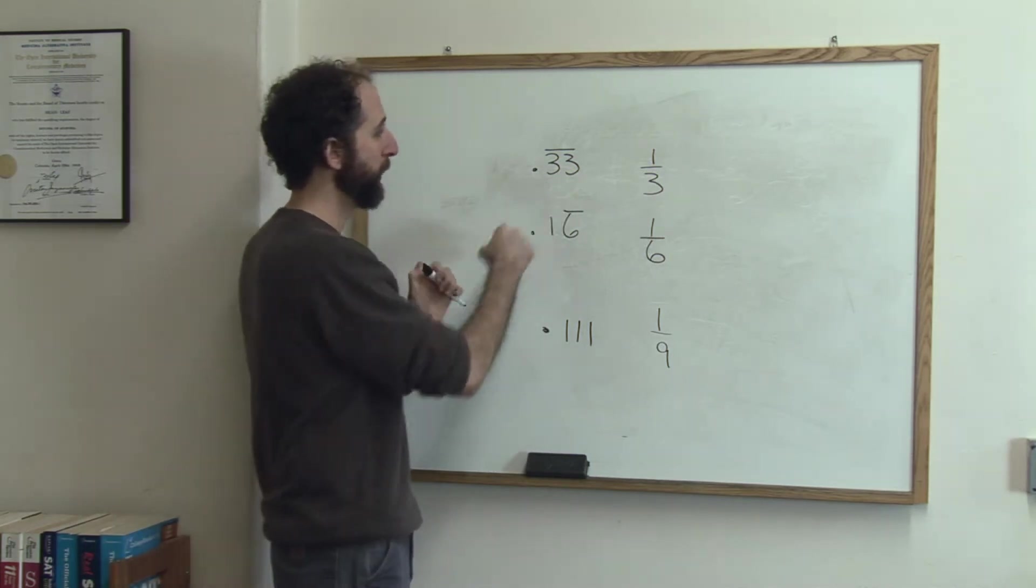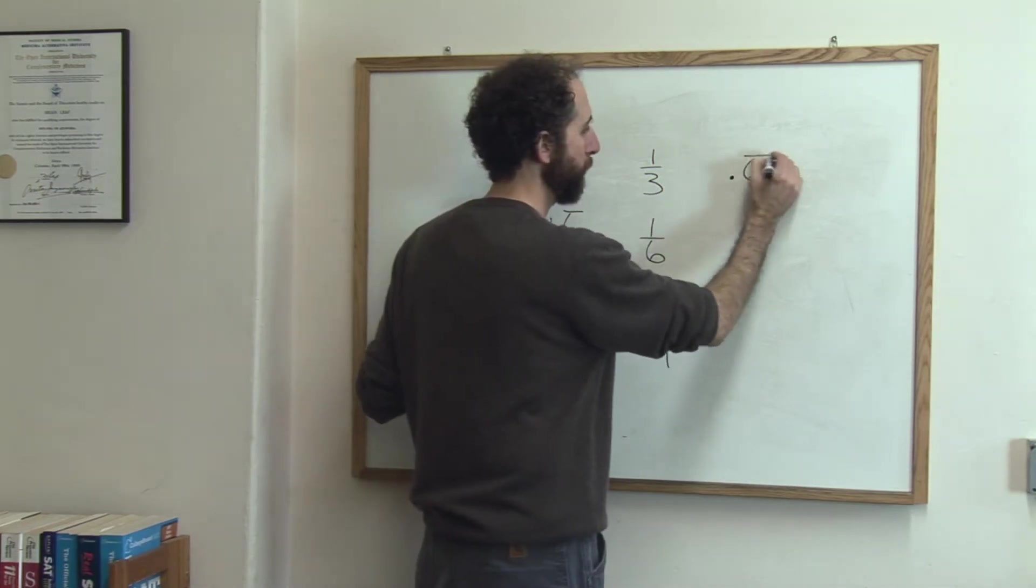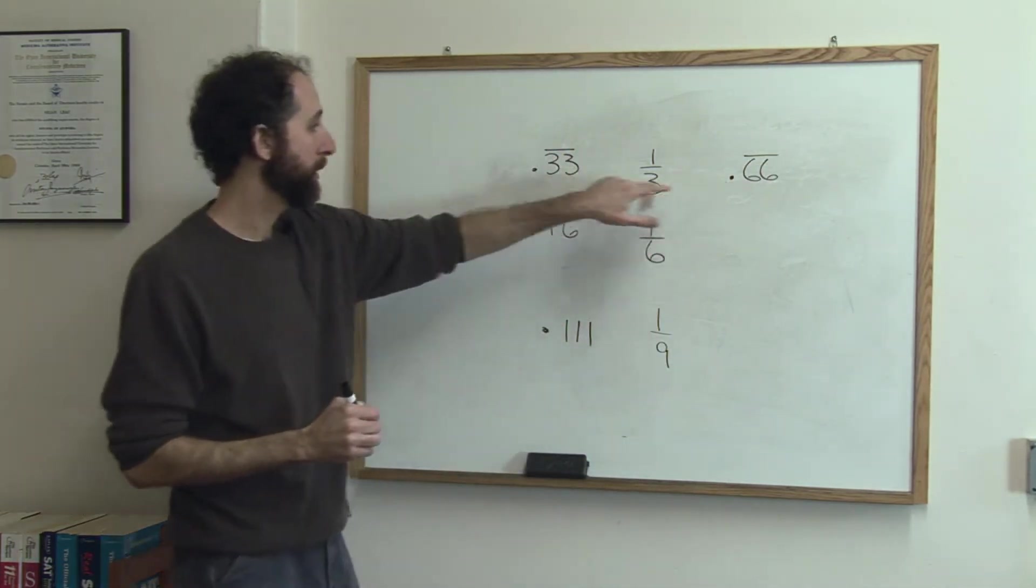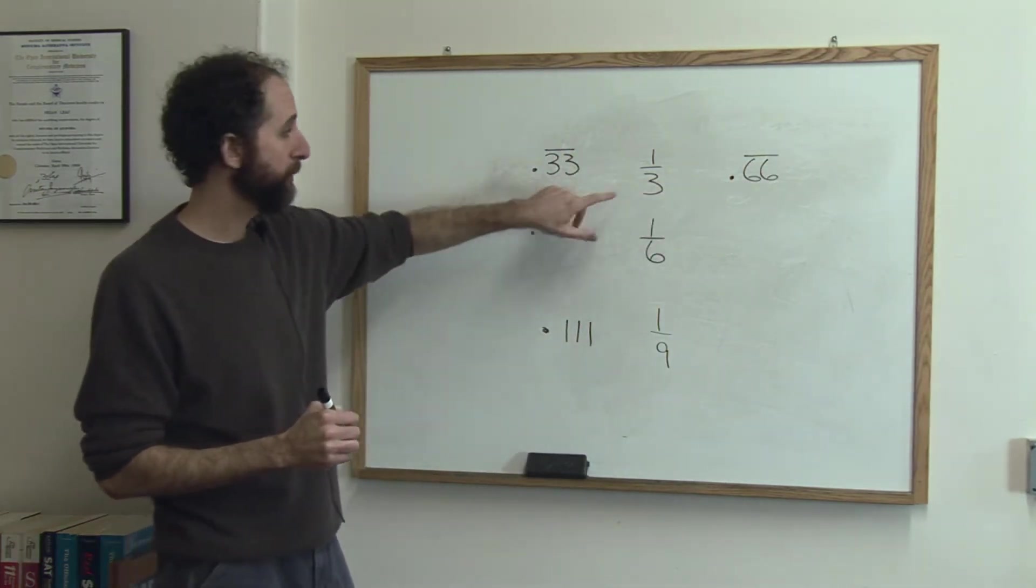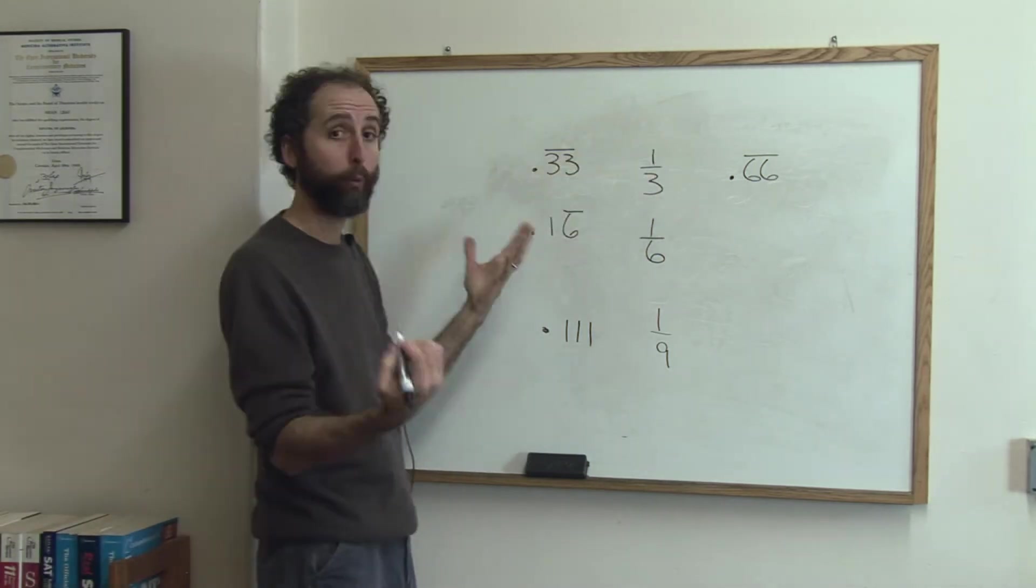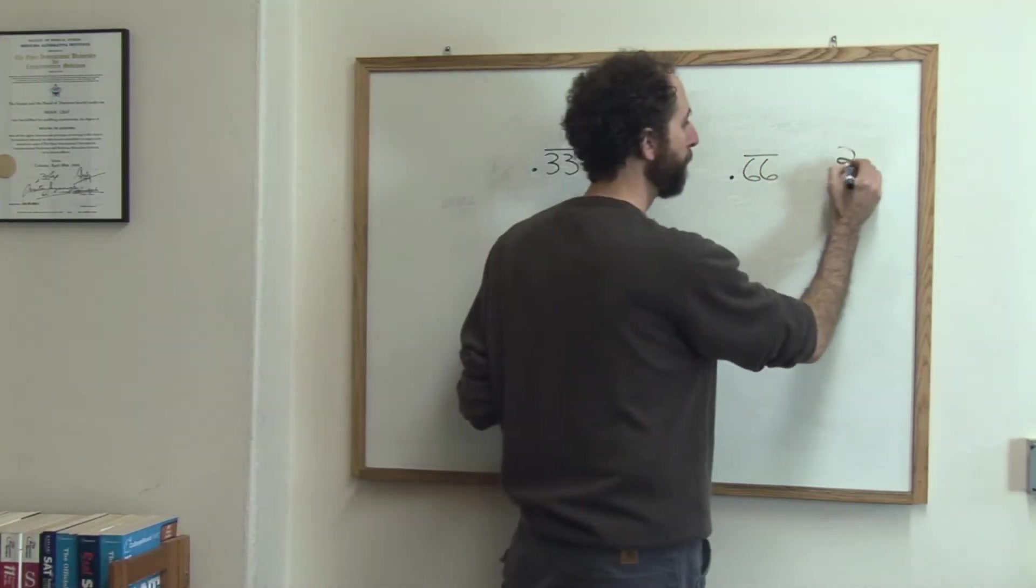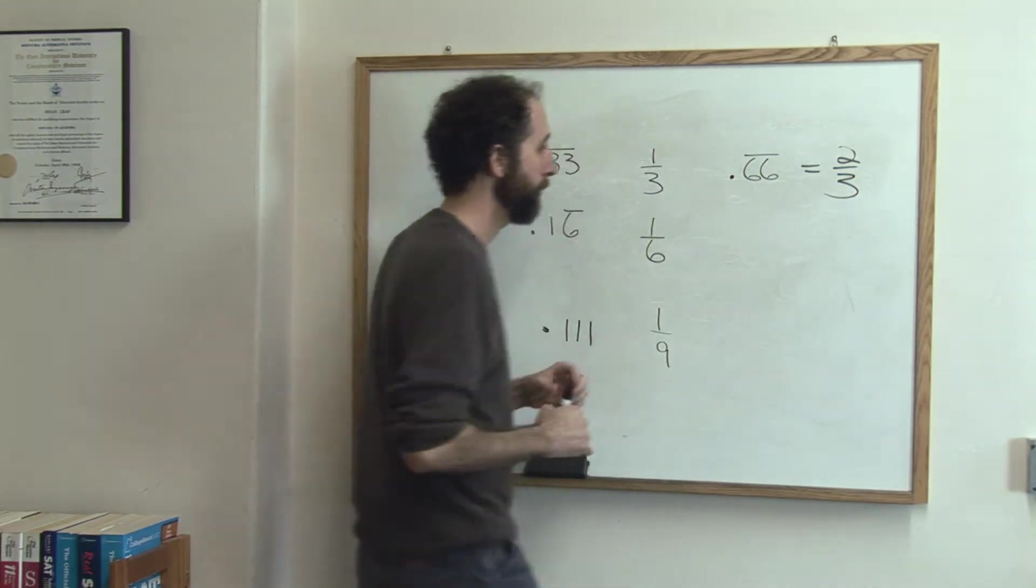The other one that this relates to is .66 repeating, which is exactly double this. And so the fraction is exactly double this, so it's not one-third, it's two-thirds. Two-thirds is double one-third.